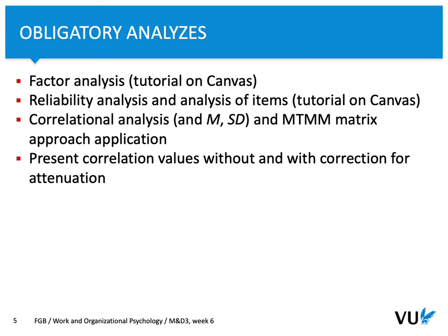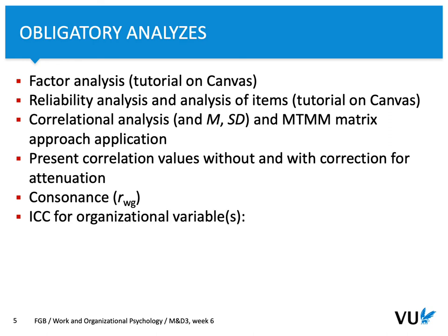Remember to present correlation values without and with correction for attenuation — meaning you need to apply the formula to correct for attenuation. You also need to calculate the R_wg coefficient and apply ICC analysis. Check whether there are differences between levels of the organization variable using eta square, as calculated in the ANOVA module. If eta square is higher than 0.10, it is very important to analyze correlations within the levels.